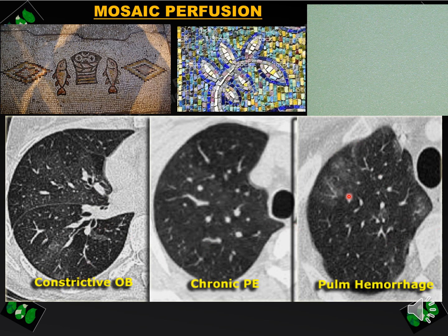However, when the high attenuation area shows high or equal blood vessel size compared with the low attenuation area, we consider the low attenuation area as normal. The high attenuation area then represents ground glass opacity — as in this patient with pulmonary hemorrhage — shown by these ground glass areas.